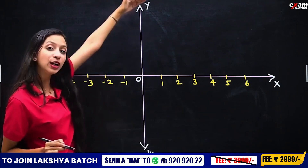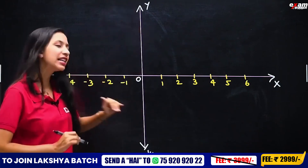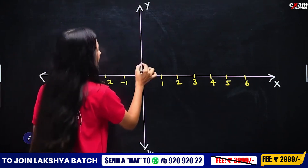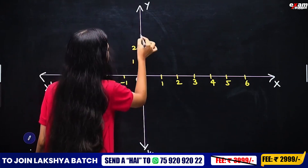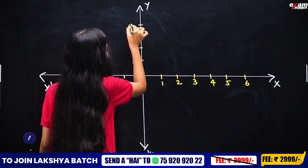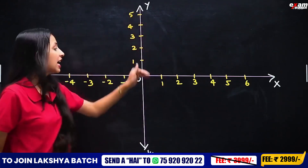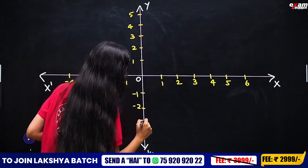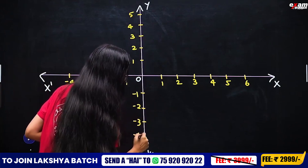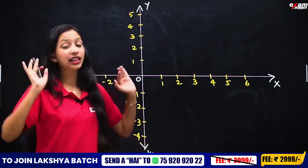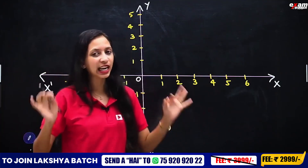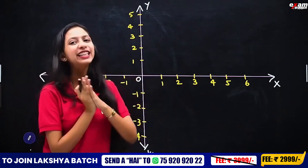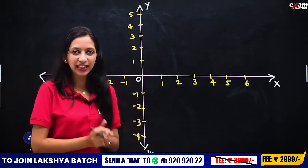We have to mark above 0 on the y-axis. Above means positive numbers: 1, 2, 3, 4, 5. Below the origin we mark minus 1, minus 2, minus 3, minus 4. We mark these points so we will have a clear impression on the graph. That's why we mark the points.